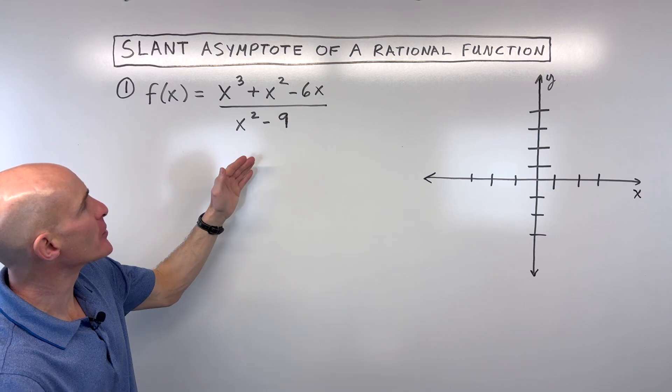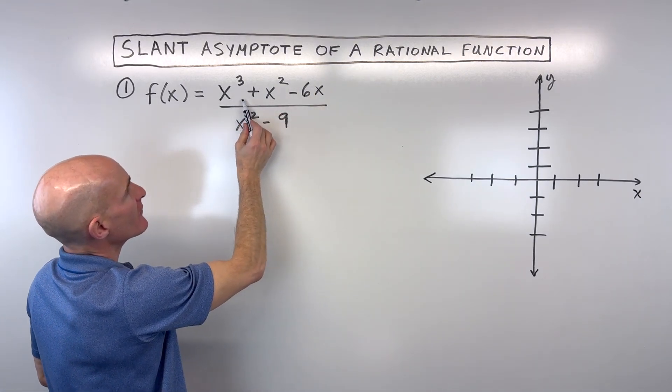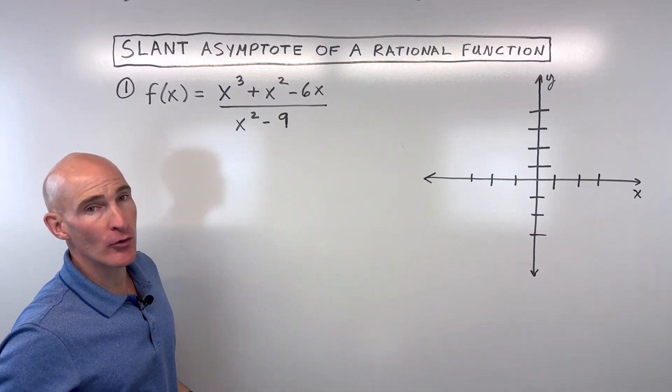If we look at this first example here, you can see this is a rational function. Rational just means a ratio, so you have a polynomial divided by a polynomial here.